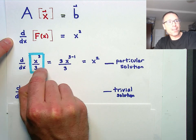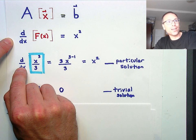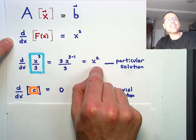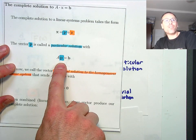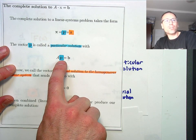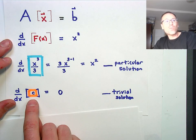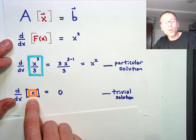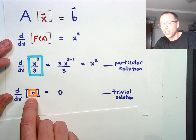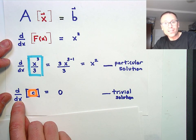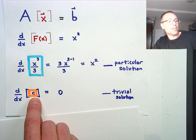And then we said the reason that x cubed over 3 was a particular solution is if I hit that vector, if I hit this thing with my matrix, I get the exact b on the right hand side. That was the definition of a particular solution. If I hit the particular solution with my matrix, I get the exact b that I expect. The reason we call this a trivial solution or a 0 solution is if I hit this solution with my matrix, I get back to 0. The derivative of a constant is 0.